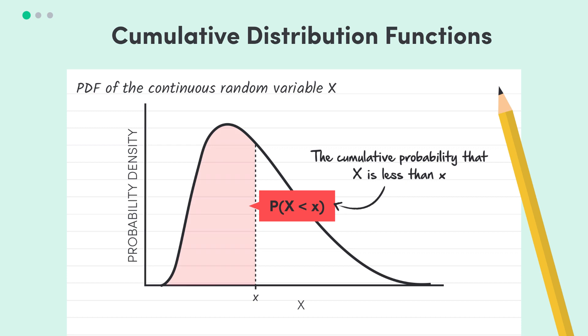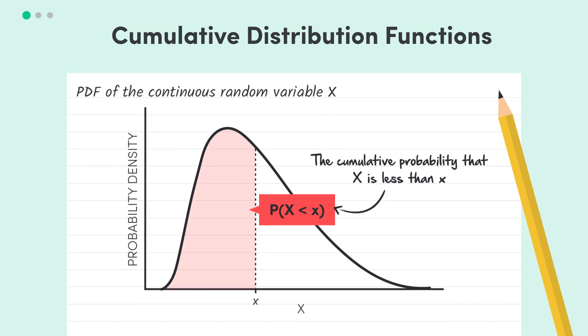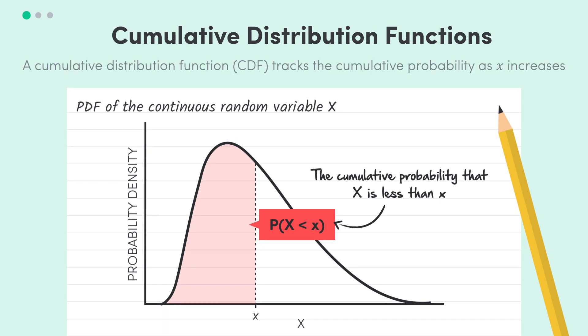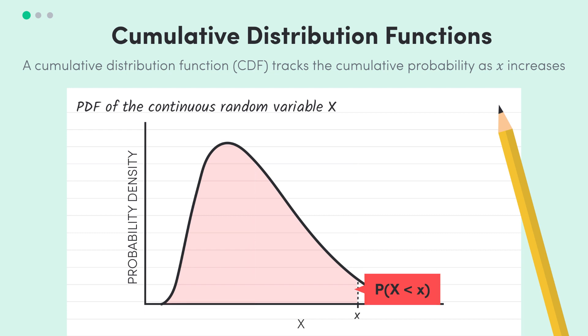What a cumulative distribution function, or CDF, does is that it tracks this cumulative probability, and sees how it accumulates as we increase x. Basically, what is the probability that our random variable x is less than a particular value, and how does that change as we increase that particular value?